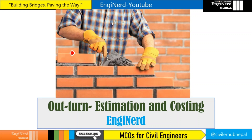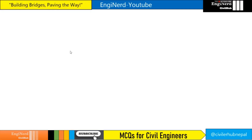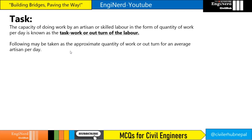Welcome to Engineered. Today we will discuss the outturn of labor from estimation and costing. Task work, or outturn of labor, is the capacity of doing work by an artisan or skilled labor in the form of quantity of work per day. The following may be taken as the approximate quantity of work or outturn for an average artisan per day.